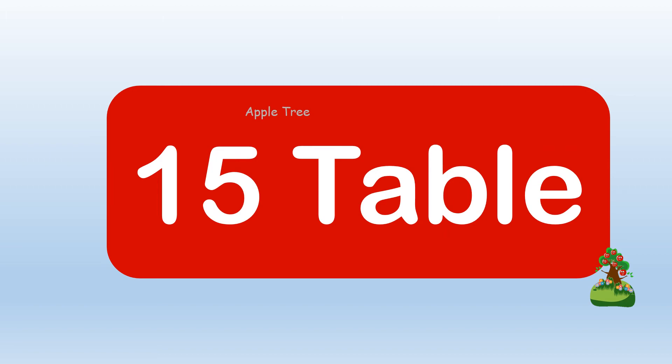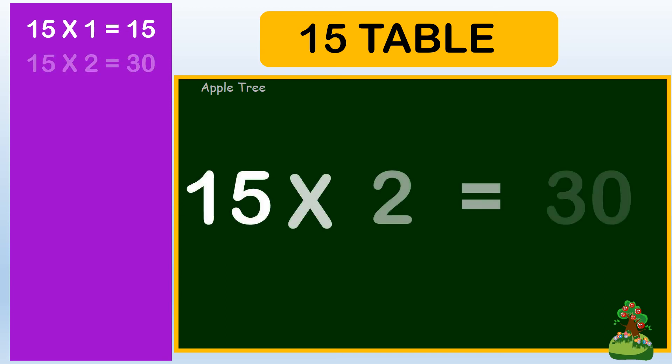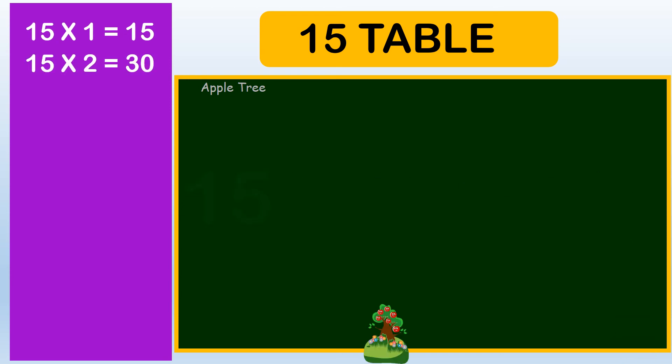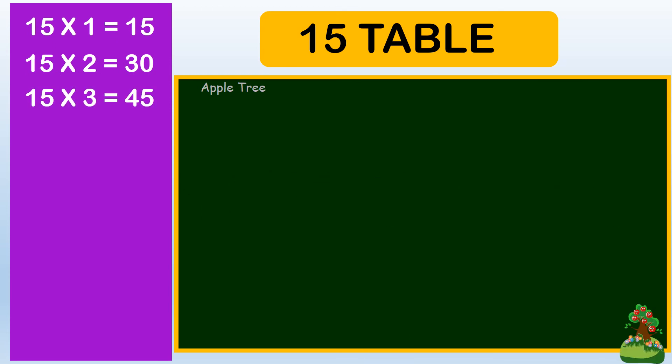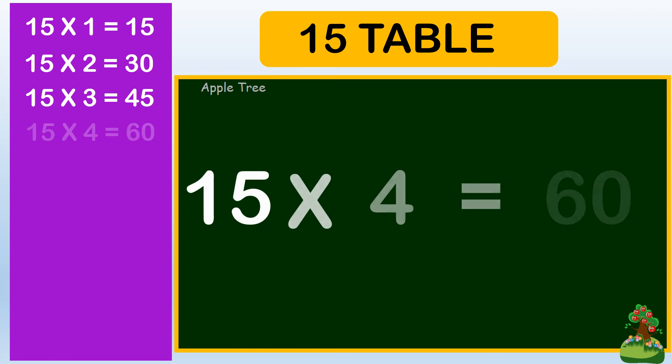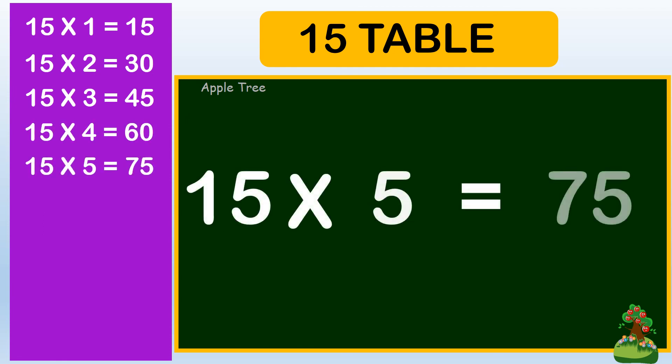Table for 15. 15 ones are 15, 15 twos are 30, 15 threes are 45, 15 fours are 60, 15 fives are 75,